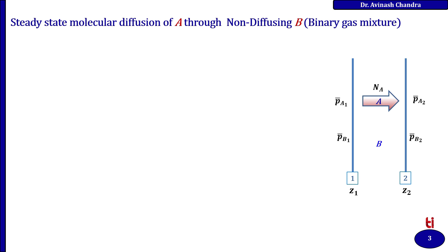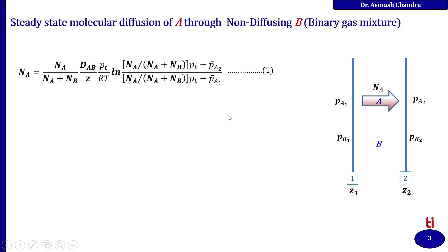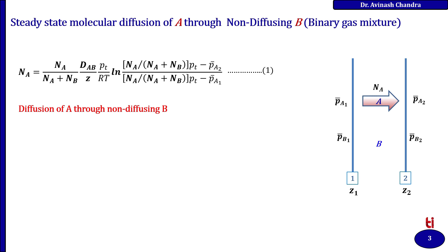Consider a gas having concentration Pa1 at position Z1 and Pa2 at position Z2, where component A is diffusing from position 1 to position 2. From the previous results, the general expression for the mass flux can be rewritten as: Na = (Na / (Na + Nb)) × (Dab / Z) × (P / RT) × ln[(Na / (Na + Nb) × Pt − Pa2) / (Na / (Na + Nb) × Pt − Pa1)]. When A is diffusing through non-diffusing B, Na has a constant value, whereas Nb equals 0.